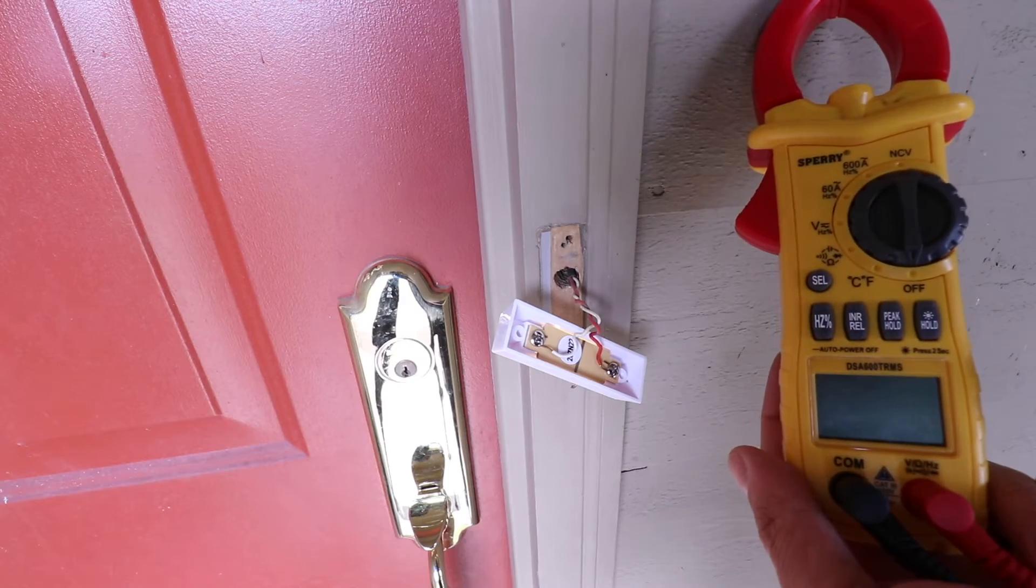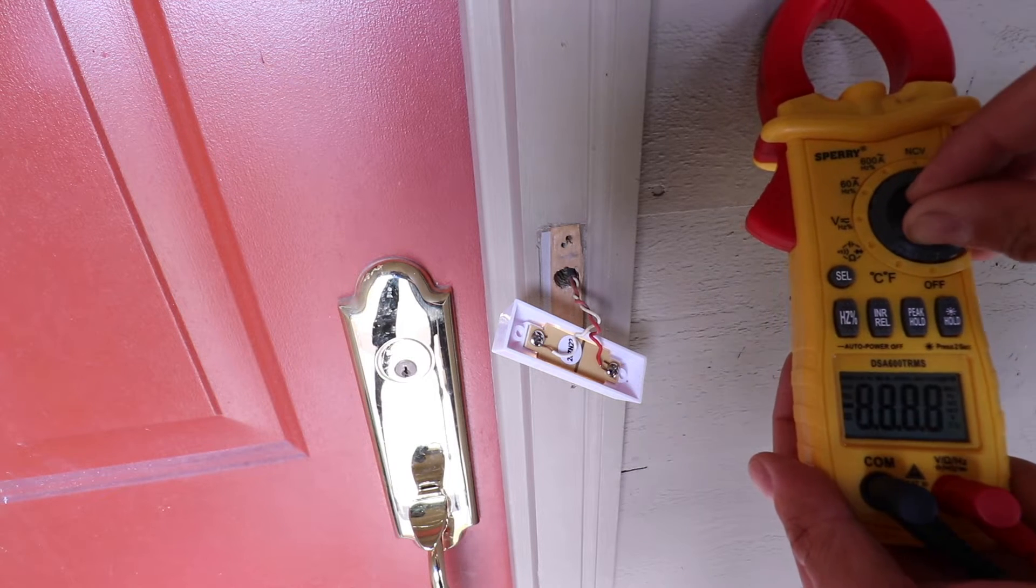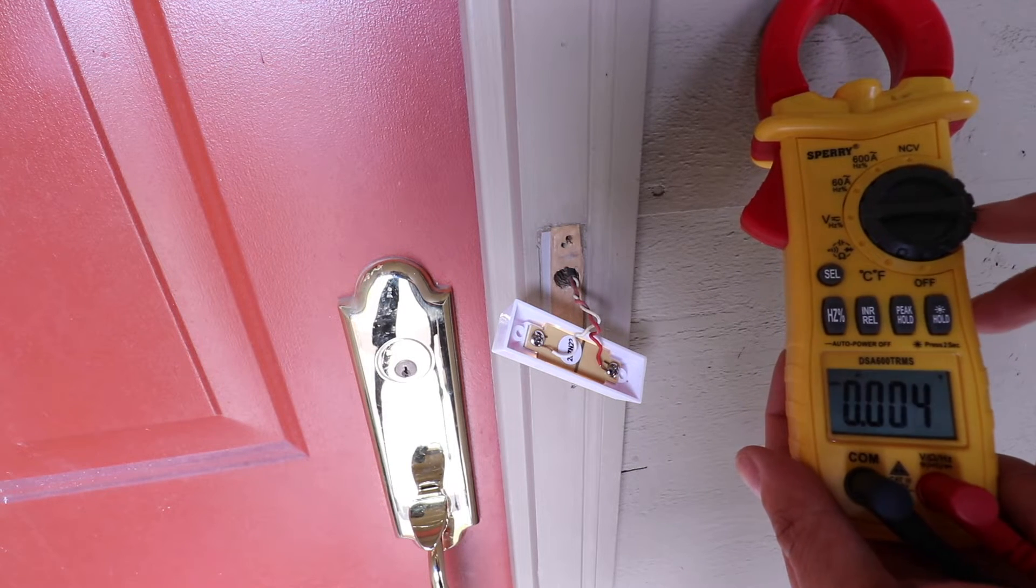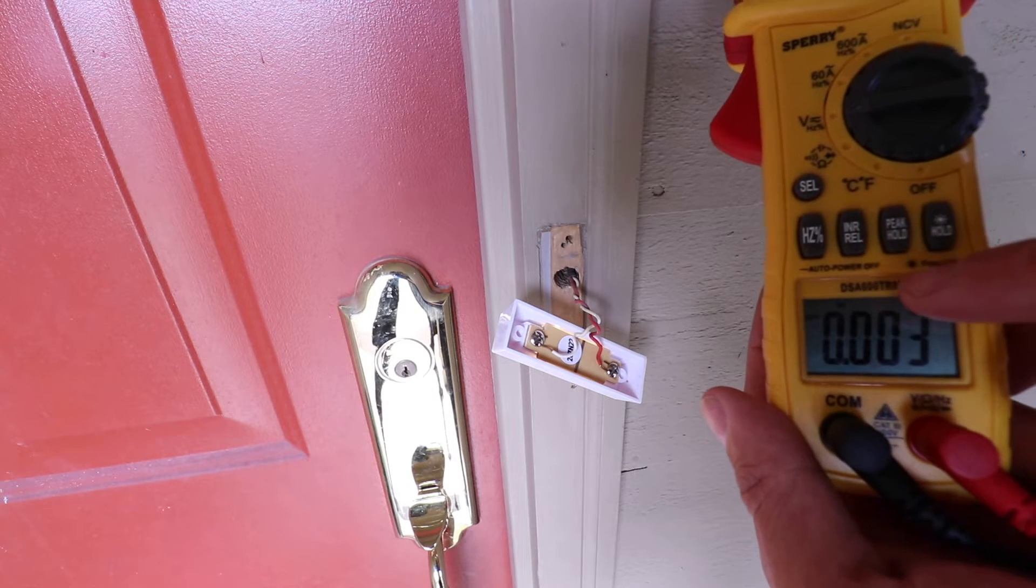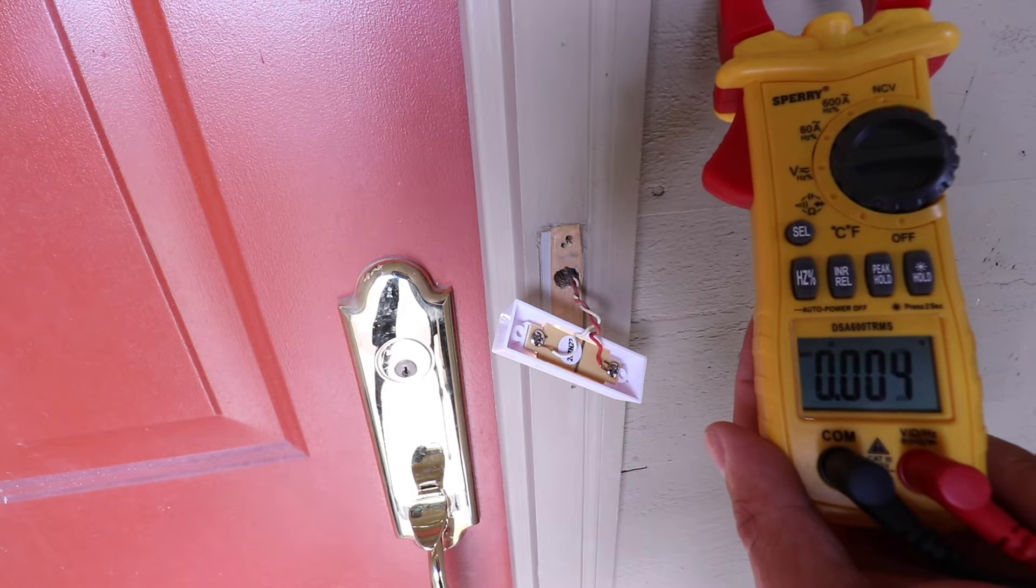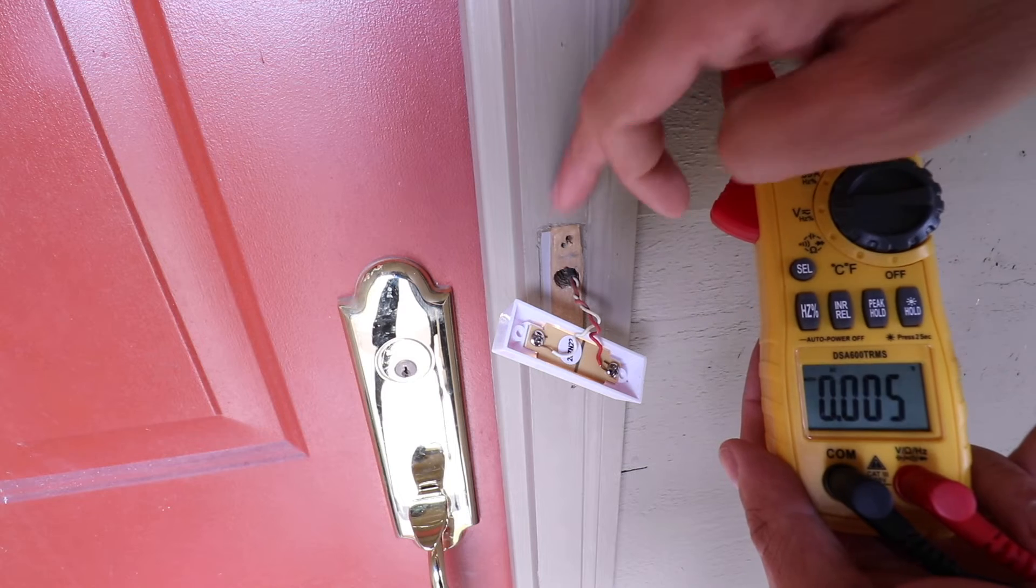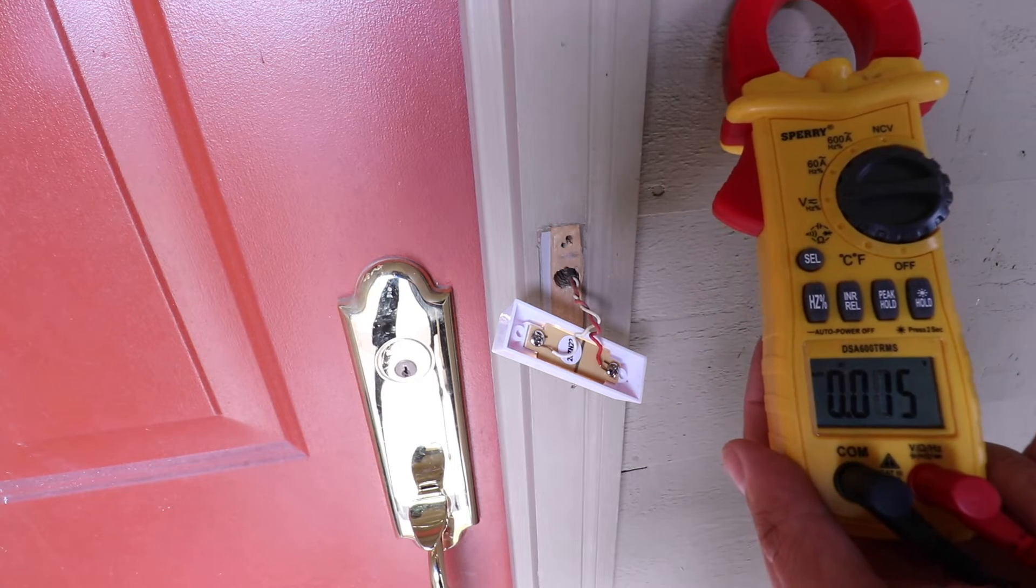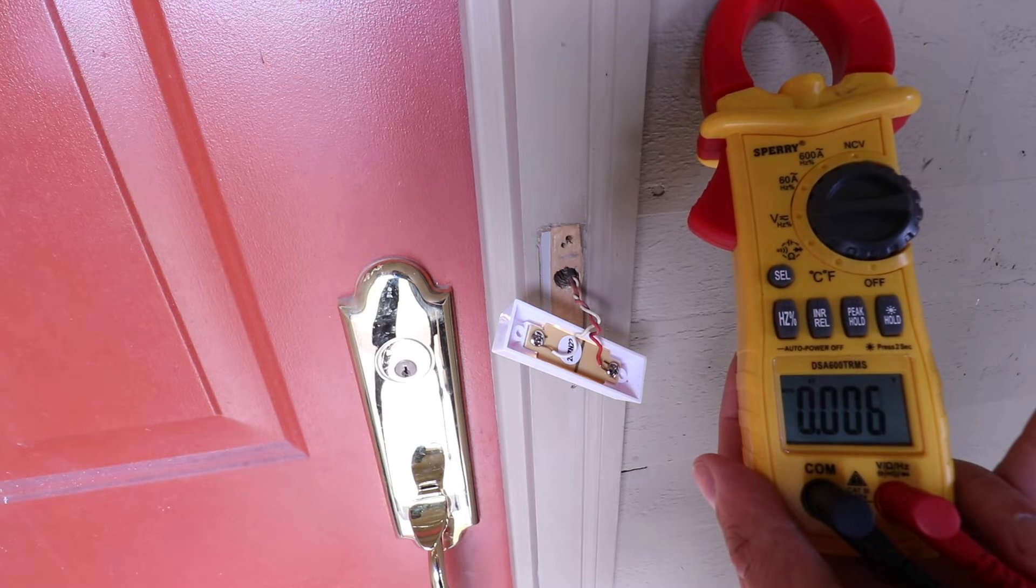Now we're ready to take our voltage reading with our multimeter. We're going to turn it on and turn it to the voltage setting. You can see down here it says AC current. This will measure either AC or DC current. You want to make sure that you have it on AC current because typically doorbells will run on an AC current transformer that is anywhere from 0 to 24 volts.